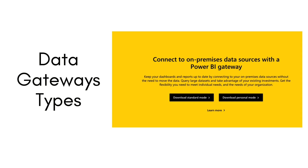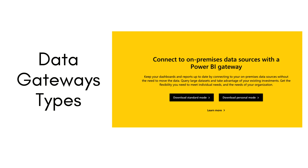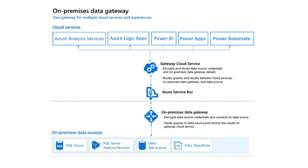I always recommend you to install the Power BI data gateway in standard mode. The reason is whenever you are working in an organization, you are not the only one who's going to manage those gateways. You have to also assign another person or developer in your organization as an admin to that gateway, and for that case you are going to need a standard mode data gateway. The on-premise data gateway is for multiple cloud-based services — Azure Analysis Services, Azure Logic Apps, Power BI, Power Automate, or Power Apps — and also for on-premise data sources.